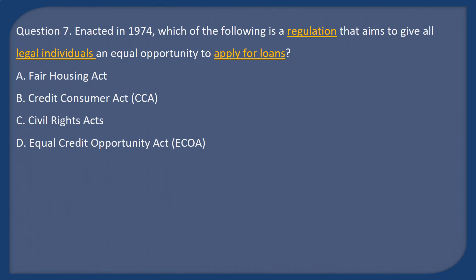Question 7: Enacted in 1974, which of the following is a regulation that aims to give all legal individuals an equal opportunity to apply for loans? A. Fair Housing Act. B. Credit Consumer Act (CCA). C. Civil Rights Act. D. Equal Credit Opportunity Act (ECOA).